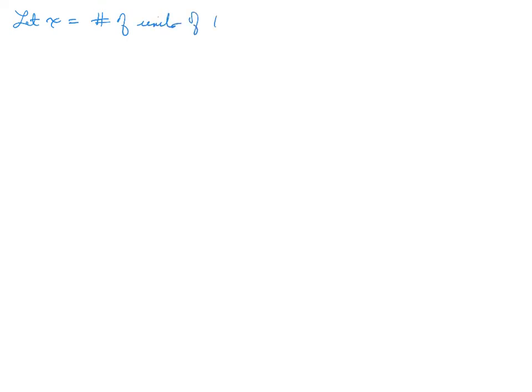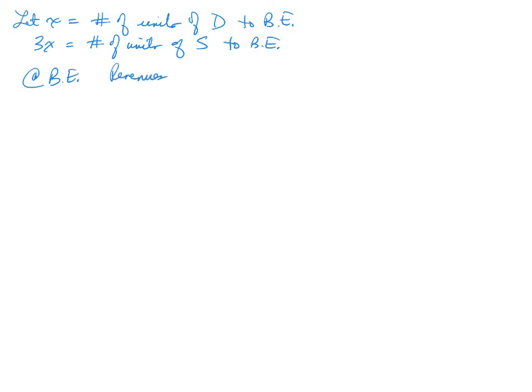For those who prefer algebraic expressions, there is another way to solve this. If you're comfortable with the bundle method you might want to skip this part, but if you like algebraic expressions you may find this more beneficial. Using the same problem, let X equal the number of units of the deluxe to break even. Then 3X must be the number of units of the standard to break even. At break-even, revenues minus variable cost minus fixed cost equals zero.